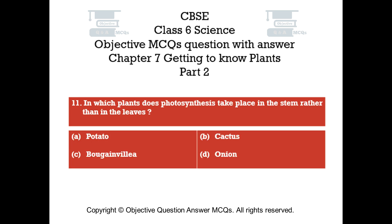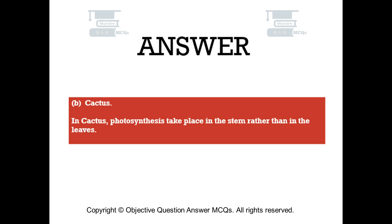Question number eleven. In which plants does photosynthesis take place in the stem rather than in the leaves? Option A potato. Option B cactus. Option C bougainvillea. Option D onion. The right answer is option B — cactus. In cactus, photosynthesis takes place in the stem rather than in the leaves.